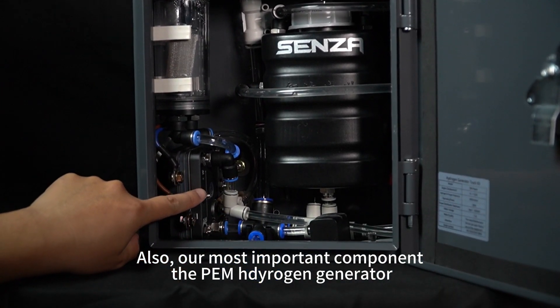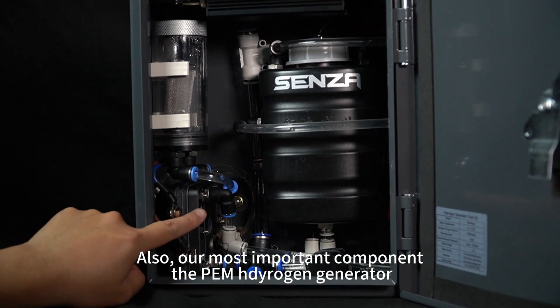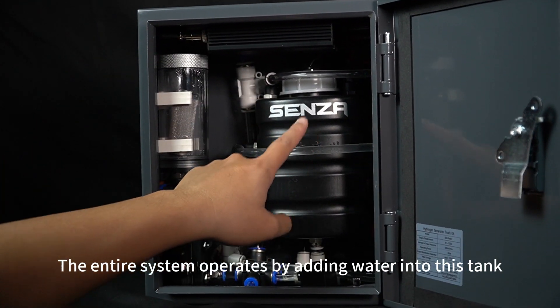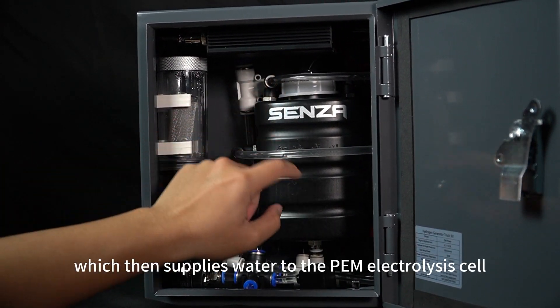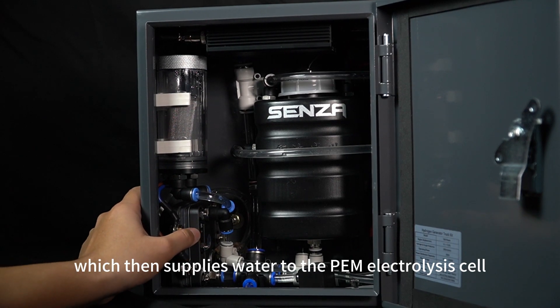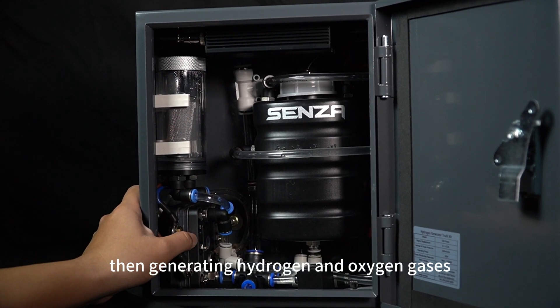Also, our most important component, the PEM hydrogen generator. The entire system operates by adding water into this tank, which then supplies water to the PEM electrolysis cell, then generating hydrogen and oxygen gases.